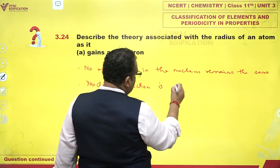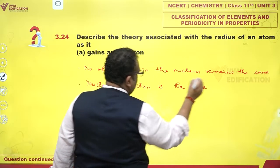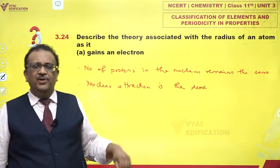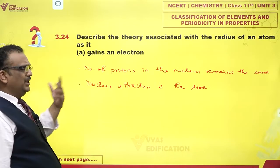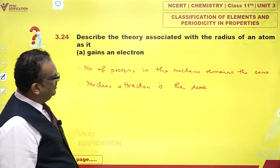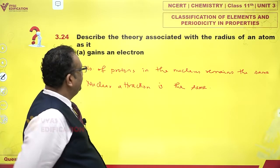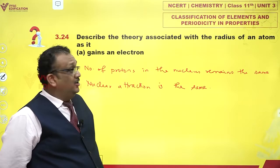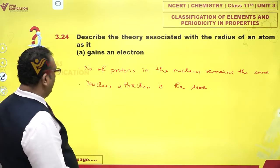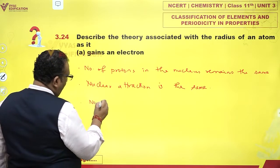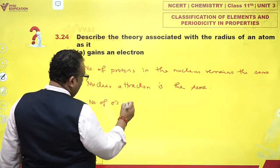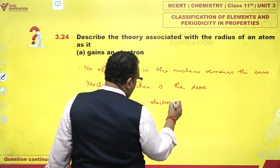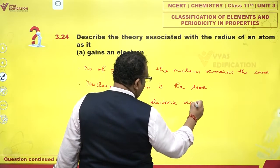The nuclear attraction remains the same. This question has appeared before in NCERT, but let me recount it. For the same nuclear attraction, you now have more electrons because the atom has gained an electron — the number of electrons increases, and therefore electronic repulsion increases.